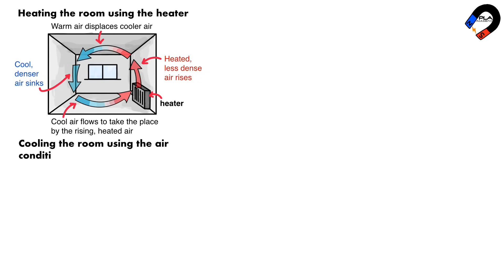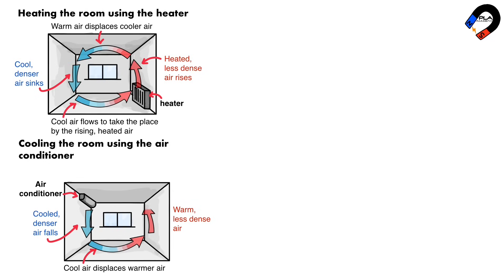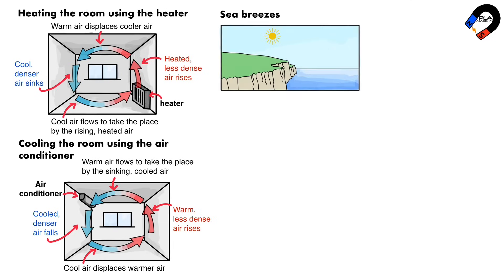The same process happens when a room is cooled by an air conditioner. The air conditioner cools the air, making it denser than the surrounding warmer air. The cooler air sinks, displacing warmer air; the warmer, less dense air rises, and warm air flows to take the place of the sinking cooled air. This process continues until the room is cooled evenly.